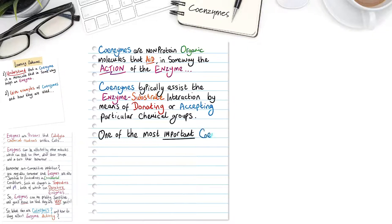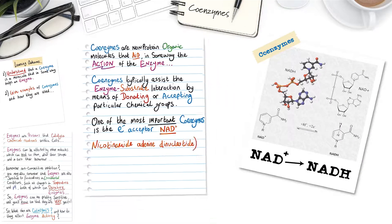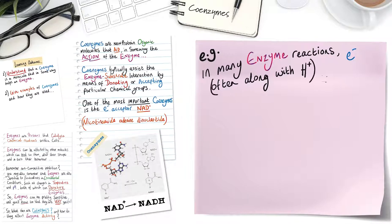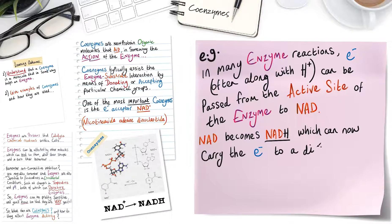One of the most important coenzymes is the electron acceptor NAD or nicotinamide adenine dinucleotide. For example, in many enzyme reactions, electrons, often along with protons, hydrogen ions, can be passed from the active site of the enzyme to NAD. NAD becomes NADH or reduced NAD, which can now carry the electrons to a different enzyme.